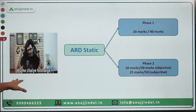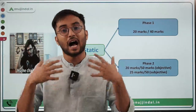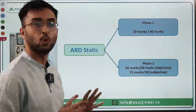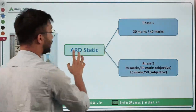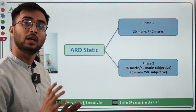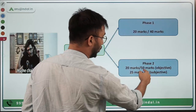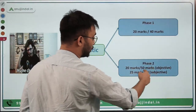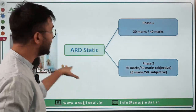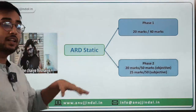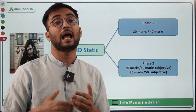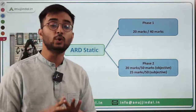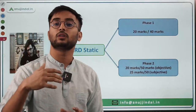The ARD section is very important for scoring high and getting a high rank in NABARD. In Phase 1, out of 40 marks, 20 marks came directly from ARD static and the rest from current affairs. In Phase 2, out of 50 objective marks, about 20 came from ARD static, and in subjective, 25 out of 50 marks were from ARD static. ARD is a multidisciplinary subject where application of knowledge matters, and anyone can score high regardless of their background.